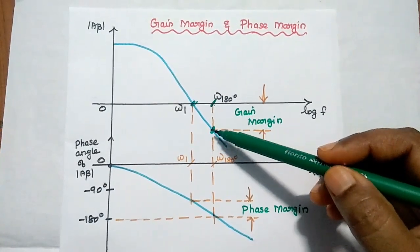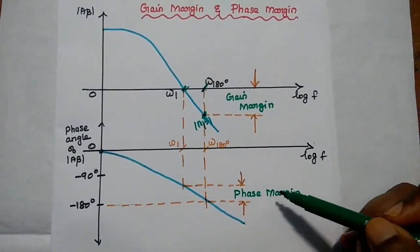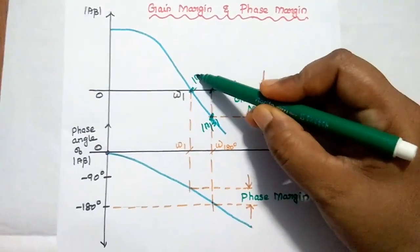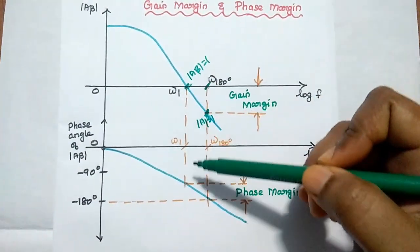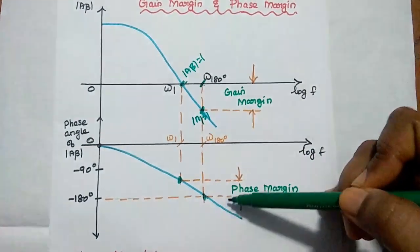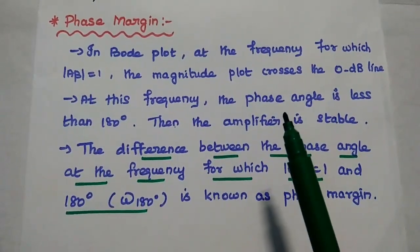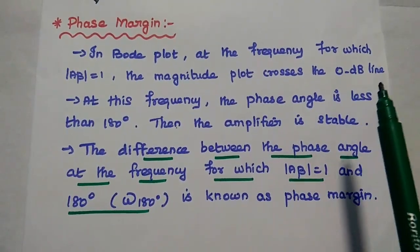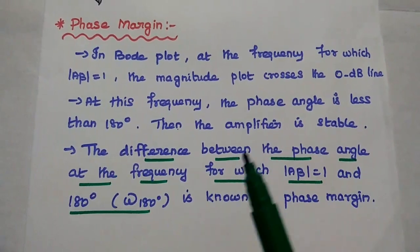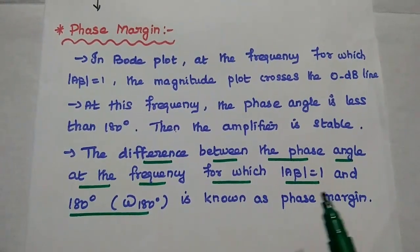Phase margin is the difference between the phase angle at the frequency for which |A·beta| equals 1 and 180 degrees. In the Bode plot, at the frequency where |A·beta| equals 1 the magnitude plot crosses the 0 dB line, and if the phase angle at that frequency is less than 180 degrees, the amplifier is stable. The difference between that phase angle and 180 degrees is known as the phase margin.